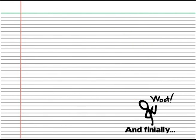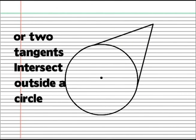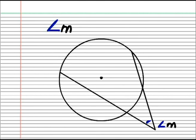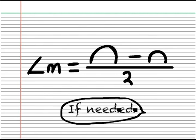And finally, when two secants, a secant and a tangent, or two tangents intersect outside a circle, the angle formed is the larger arc minus the smaller arc divided by two. You can use this little formula my geometry teacher used to help you, if needed.